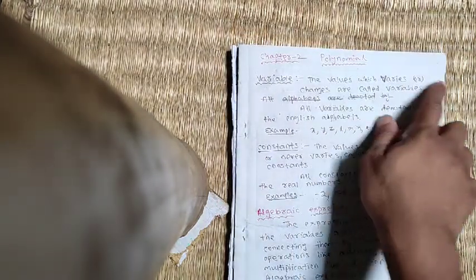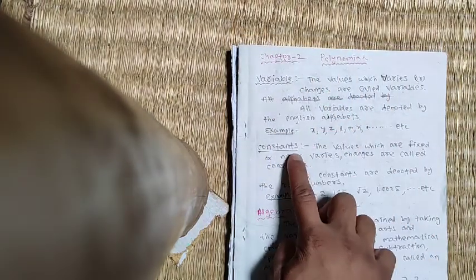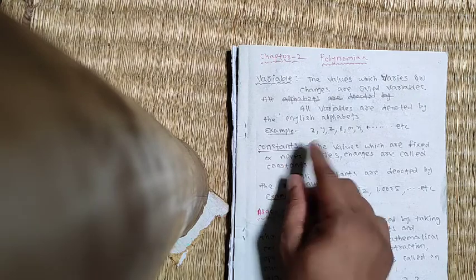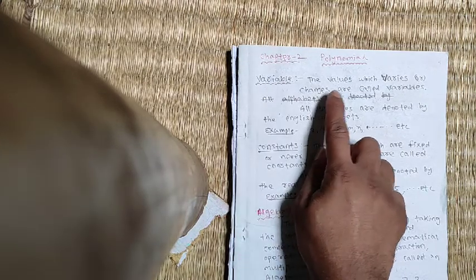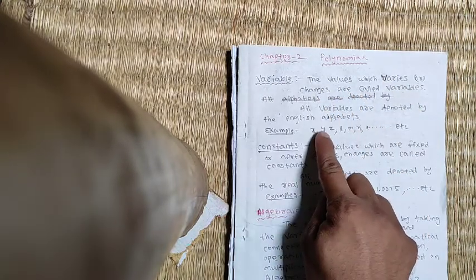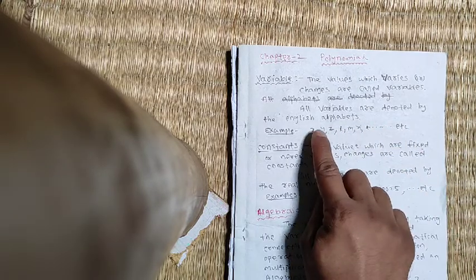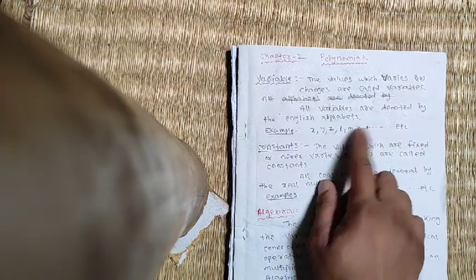So class 9 chapter 2 polynomial. Polynomial means variable and constant. Variable means the things that vary. And the variable will denote all the alphabet. We know X, Y, Z, L, M, N, A, B, C, those variables will be constant.